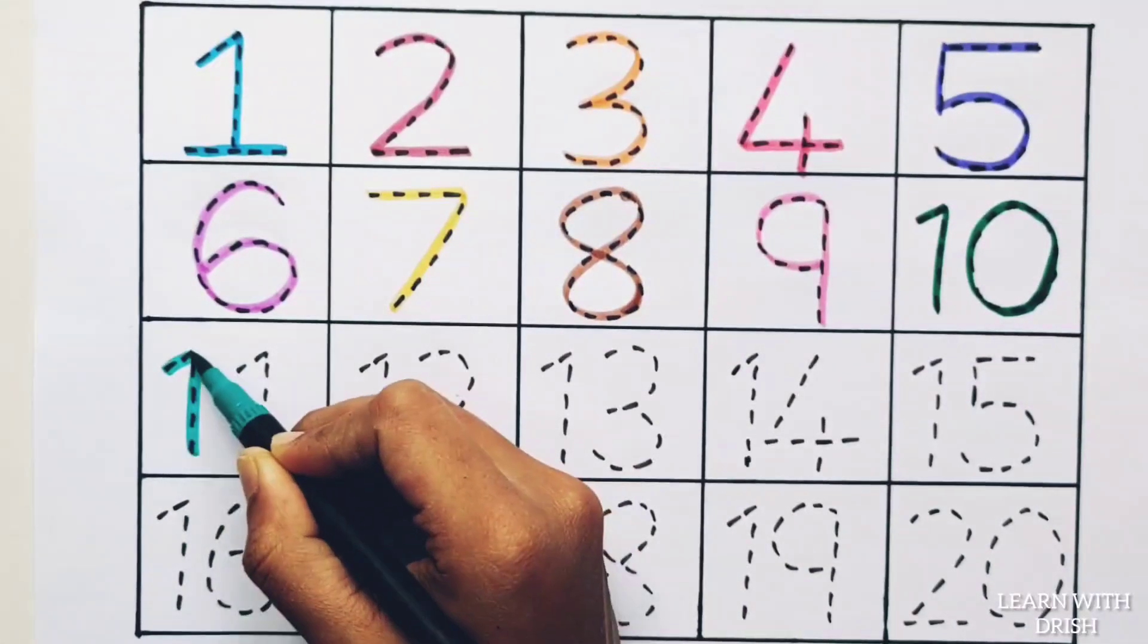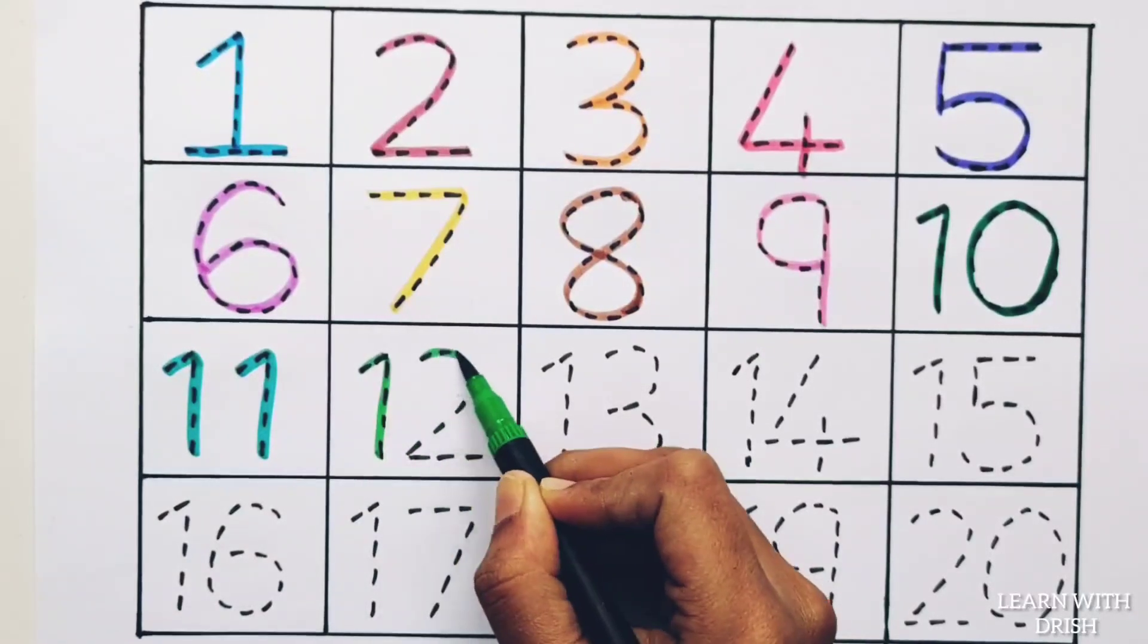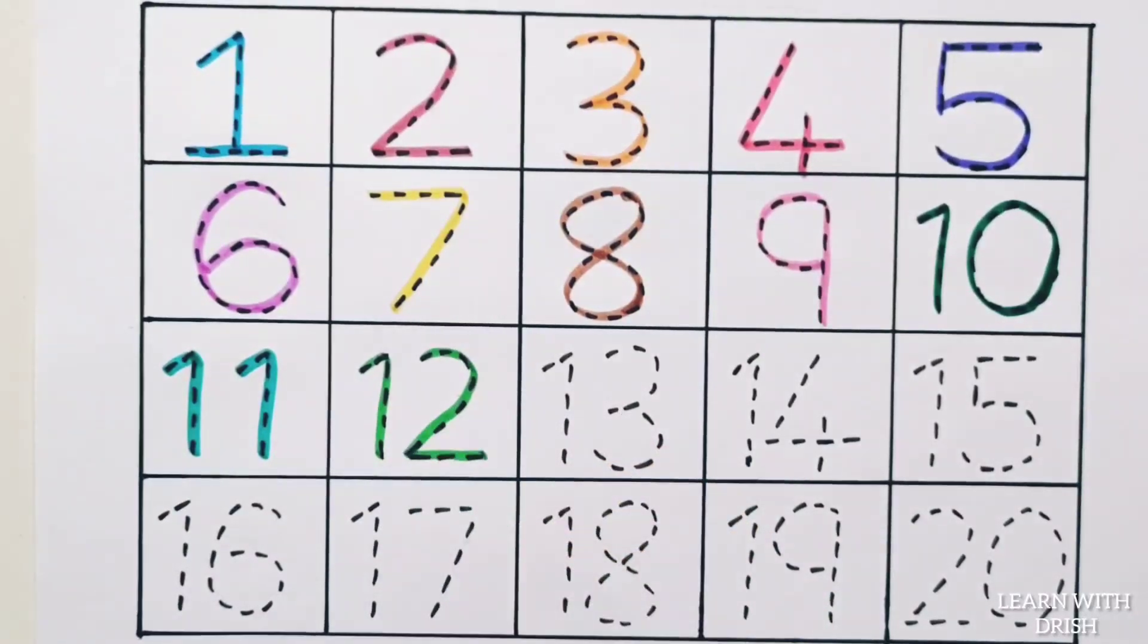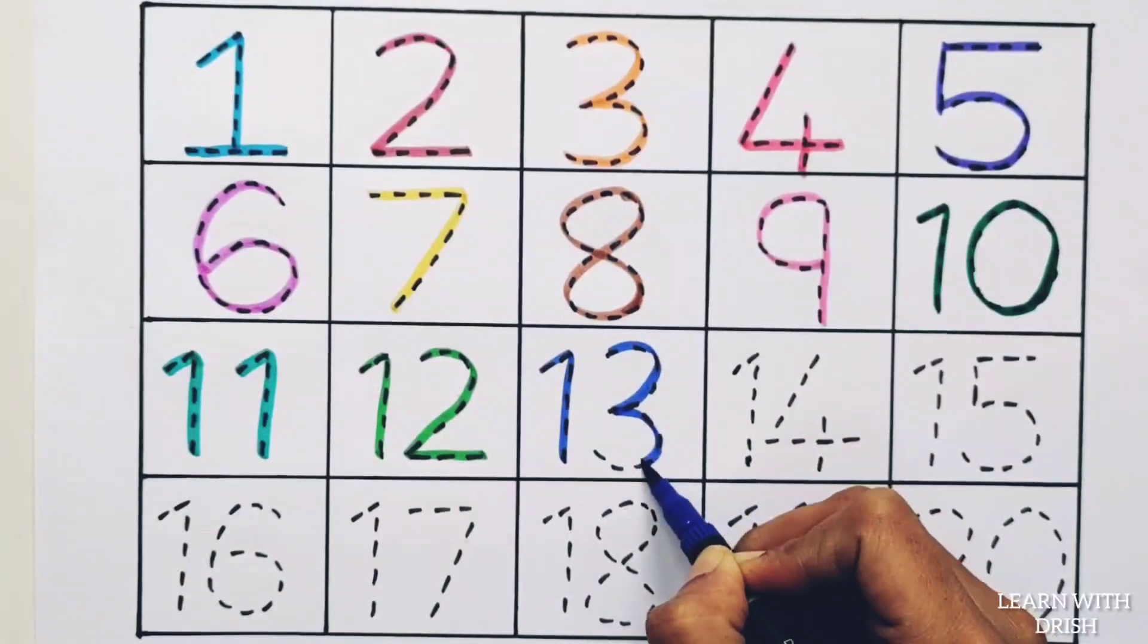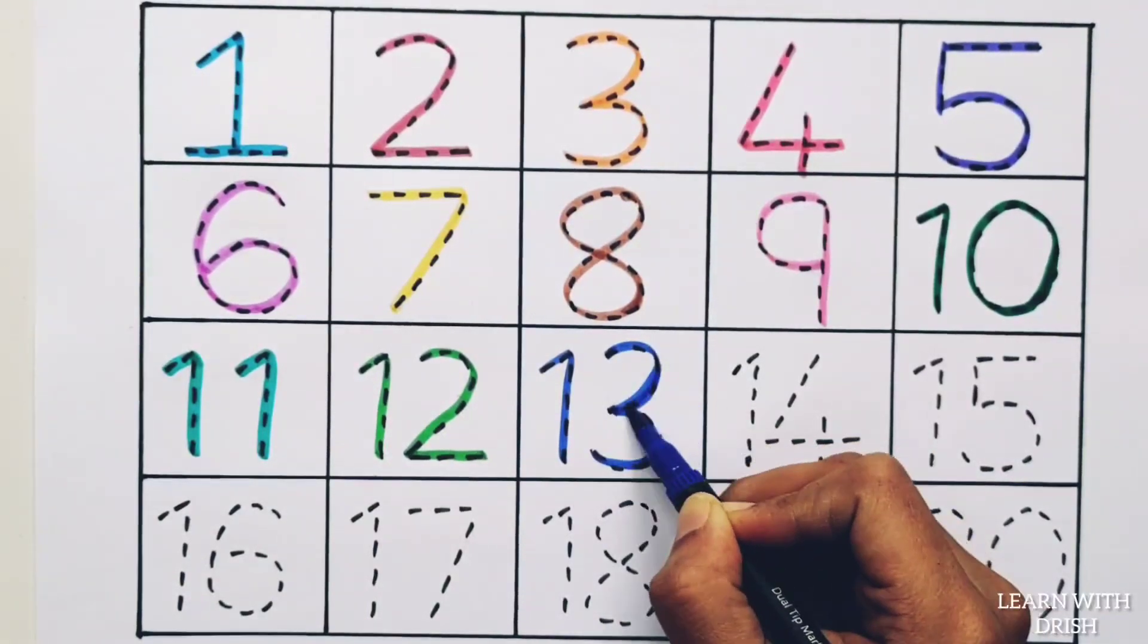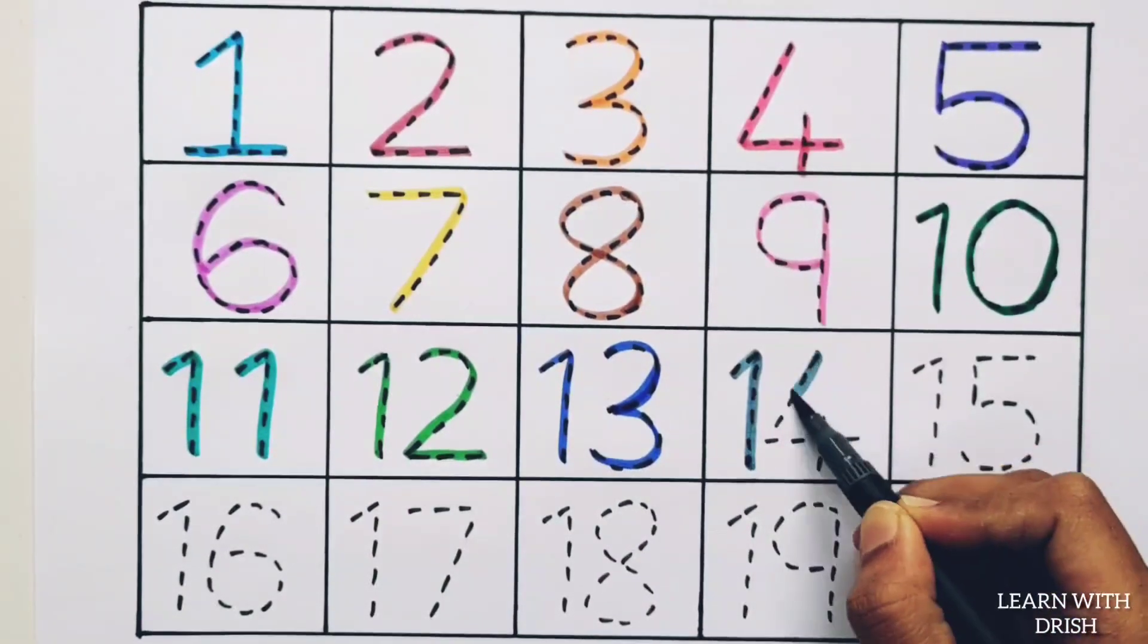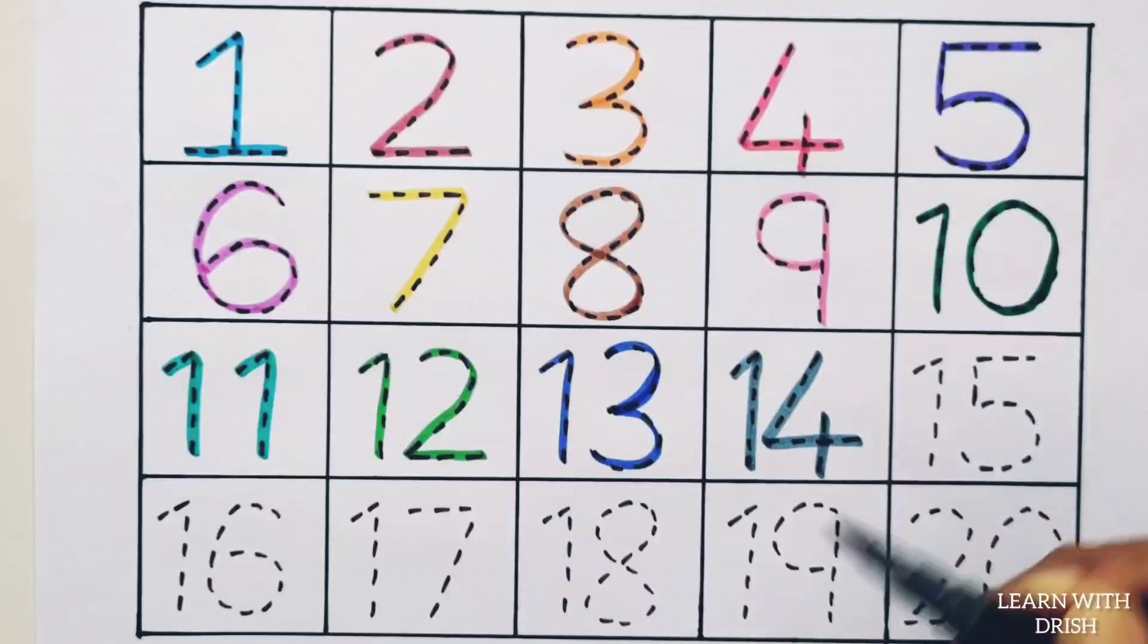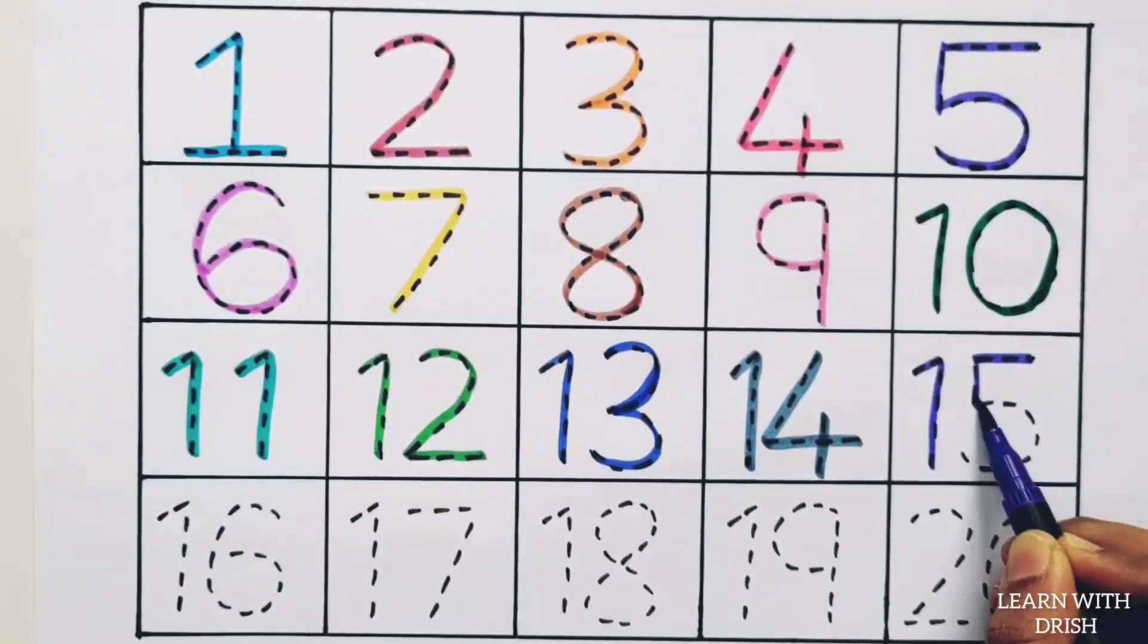11. E-L-E-V-E-N 11. 12. T-W-E-L-V-E-12. 13. T-H-I-R-T-E-E-N 13. 14. F-O-U-R-T-E-E-N 14. 15. F-I-F-T-E-E-N 15.